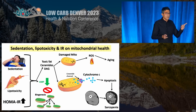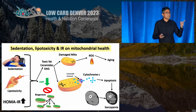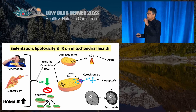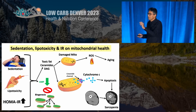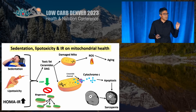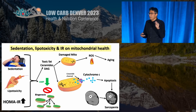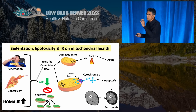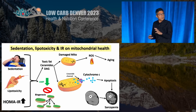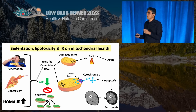On the other hand, if you have sedentary behavior, lipotoxicity, or insulin resistance, you are creating a lot more of that toxic fat that damages the mitochondria. These mitochondria don't burn cleanly — they generate a lot of free radicals that can cause aging. The toxic fat called ceramide can form a channel through which important mitochondrial proteins leach out and program the cell for death, resulting in muscle atrophy or sarcopenia.